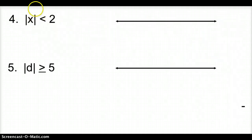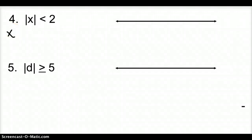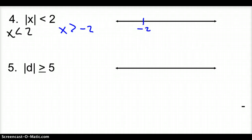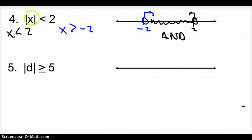Number 4: the absolute value of x is less than 2. Just like with an equal sign, we pull it out of the absolute value twice. First: x is less than 2. Second: when we make it negative, we have to flip the inequality, so x is greater than negative 2. Graphing: open circle at negative 2 shading right, open circle at 2 shading left — we shade in the middle. A less than sign with an absolute value gives us an AND statement.